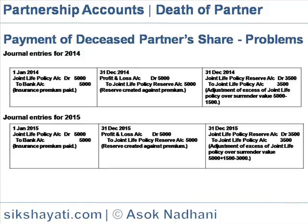Journal entry for 2015. On 1st January 2015, joint life policy account is debited 5,000 to bank account — policy premium paid for 2015. On 31st December, profit and loss account is debited 5,000 to joint life policy reserve account 5,000. On 31st December 2015, joint life policy reserve account is debited 3,500 to joint life policy account 3,500 — adjustment of excess of joint life policy over surrender value, which is 5,000 plus 1,500 for the previous year minus 3,000.